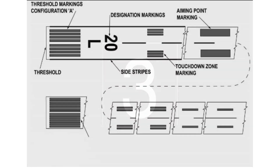This is an image of a precision instrument runway. Notice the aiming point, touchdown zone, and threshold markings. The runway is 2-0 left.